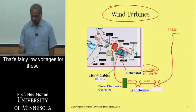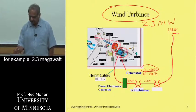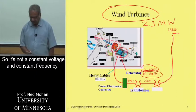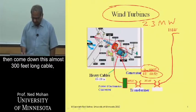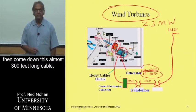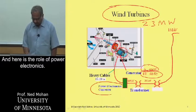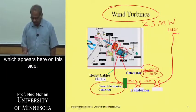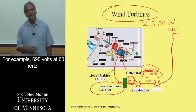It's fairly low voltage for these very high-power wind turbines — for example, 2.3 megawatts — and the frequency could also vary. So it's not a constant voltage and constant frequency, and very large amounts of current then come down this almost 300-foot, 100-meter-long cable. Here is the role of power electronics: we need to convert this variable frequency, variable voltage to a fixed frequency and fixed voltage — for example, 690 volts at 60 hertz.